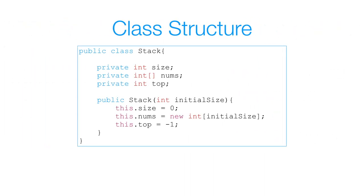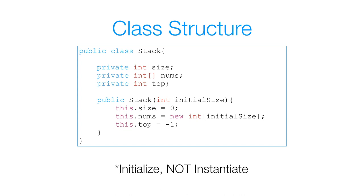Here's the class structure of a stack. I have three instance variables: the size, which represents the number of elements in our stack; an array of integers, which represents the elements in our stack; and the top, which represents the top index in our stack. For simplicity, I'm using an array of integers, but you can also use an array of objects or anything else. In my constructor, I take an initial size representing the initial size of our stack, and I instantiate my instance variables of size and top. It isn't necessary to instantiate size with a value of zero inside the constructor, because by default size already has a value of zero — I just did this for completeness.